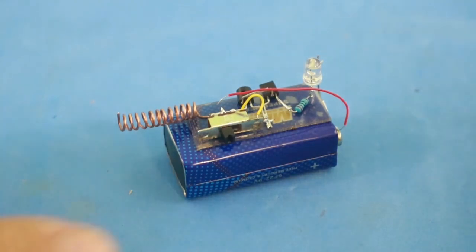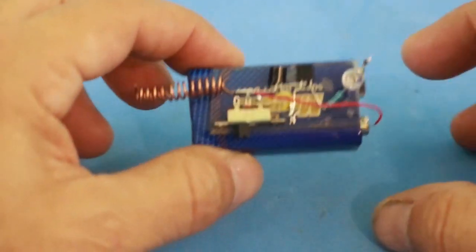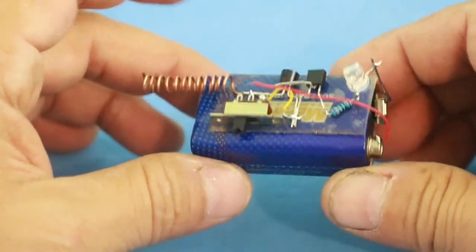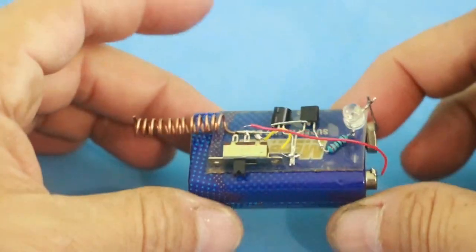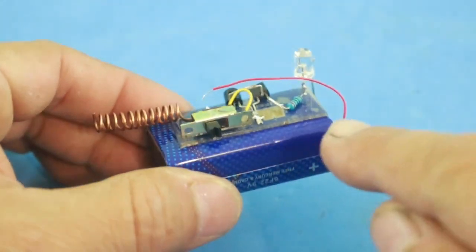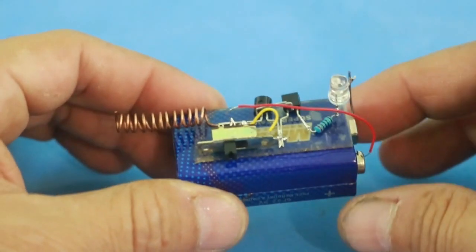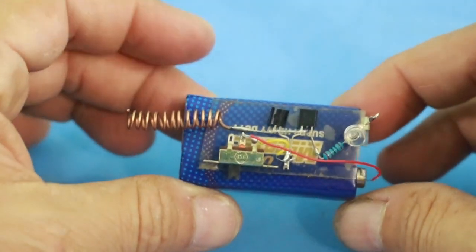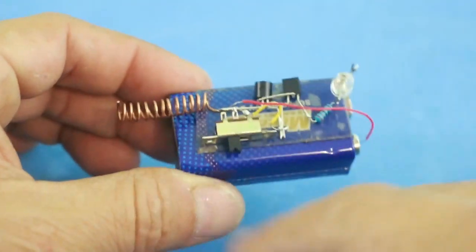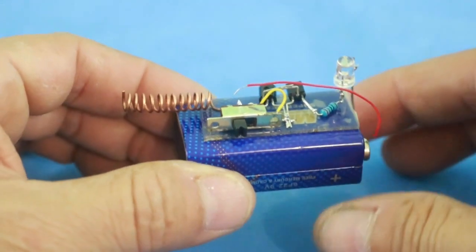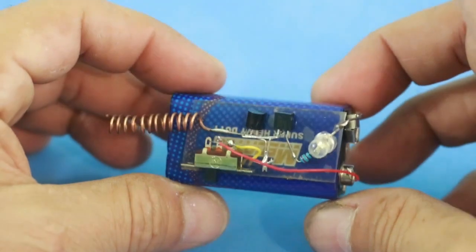So here is my circuit. I mounted all the components directly atop of a 9-volt battery. I have used double-sided tape in order to fix all the components. And I also added a switch to turn it off when we are not using it.